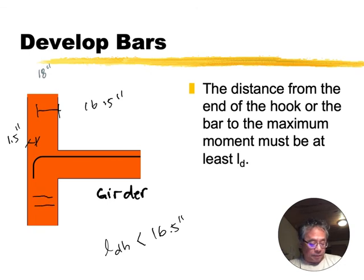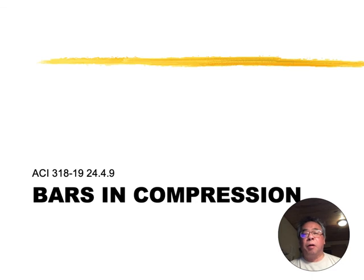If you can't get that development length less than 16.5 inches, your only choice is to make the column bigger or to use a smaller bar. But you've already picked these out. This is your negative moment steel that you designed in your girder. You could be all done and submitted that, and then you check the development length, and it doesn't work. You're going to either have to change the size of the columns or use smaller bars for your steel. So that's that.